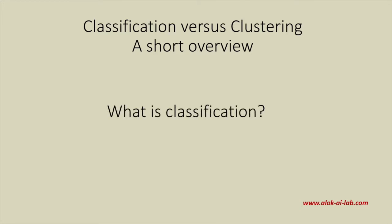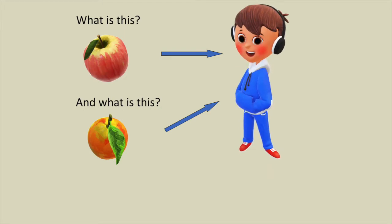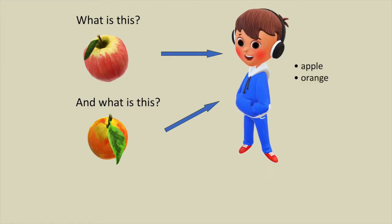Let us see what is classification with the help of an illustration. If you ask what is this or what is this to a five-year-old kid, he will immediately reply that this is an apple and this is an orange.